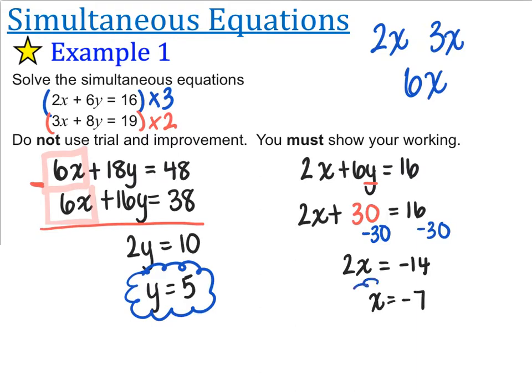I'm going to divide both sides by 2, and x is equal to minus 7. There is our second answer. So to be honest, the only new thing for today is multiplying both equations — yesterday we just multiplied one equation, today we multiply 2. Then you follow all the same steps as before. It's really not that complicated; when we split it over three lessons, it's fairly straightforward.